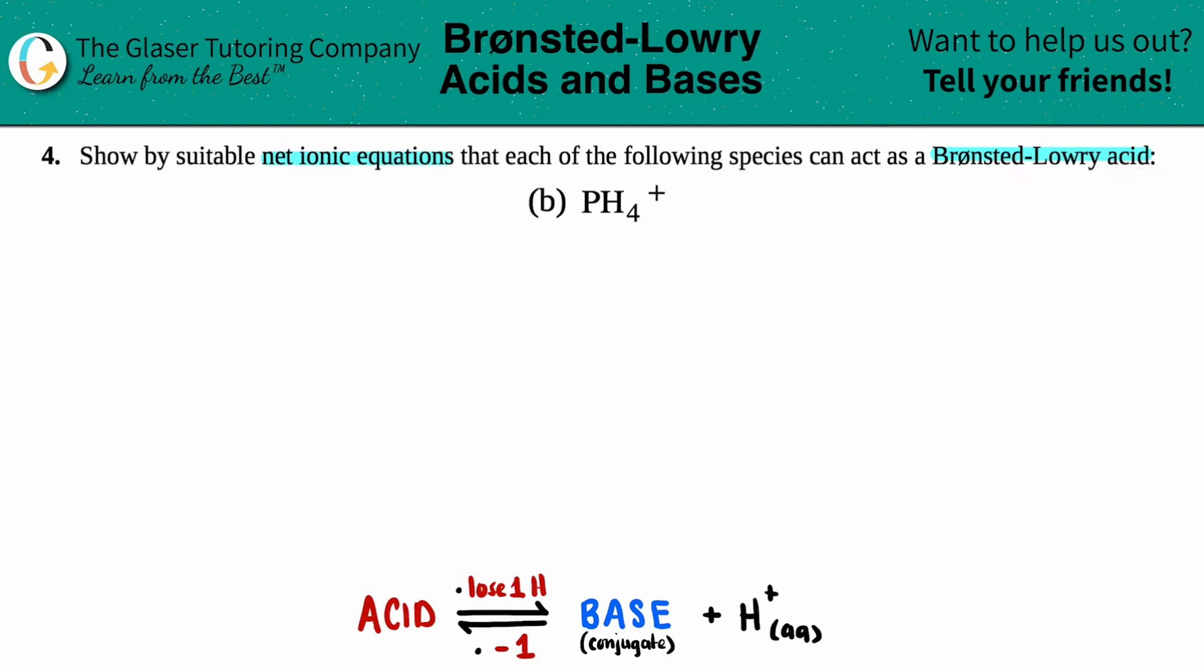Now just as a little context, Bronsted and Lowry were two scientists that came up with this idea of what acids do in aqueous solutions. And acids always donate a proton or a hydronium ion. So if you're going to donate an H, you need to have an H. And in this case, PH4 has four Hs. So we're good to go.